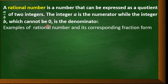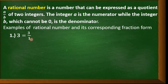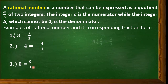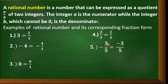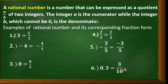Now let's have some examples of rational numbers and their corresponding fraction forms. We have 3, whose fraction form is 3 over 1 — whole numbers have a denominator of 1. Negative 4 is negative 4 over 1. Zero is 0 over 1. Two-thirds is 2 over 3. Negative three-fifths is negative 3 over 5. Three-tenths is 3 over 10.